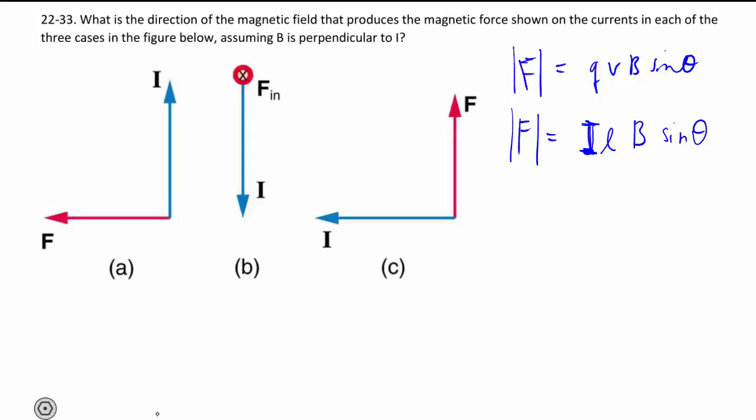In terms of direction we do it in a very similar fashion as before. Because we've defined I, conventional current, to be moving of positive charges. So that basically takes the same place as our QV right?